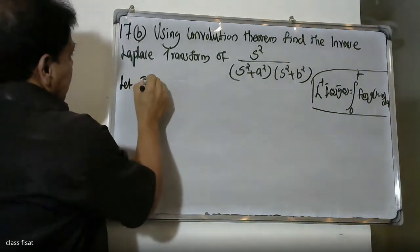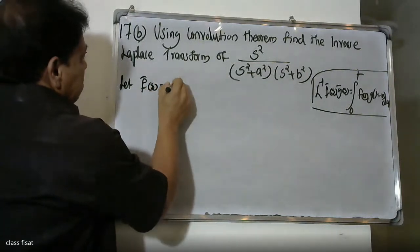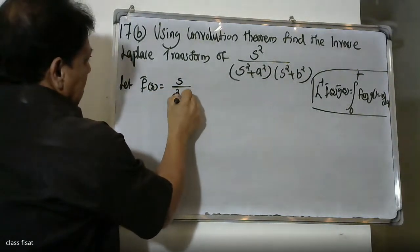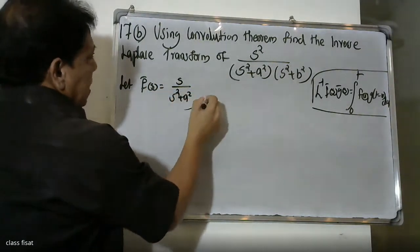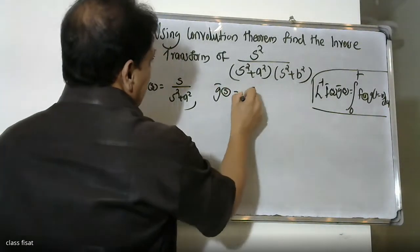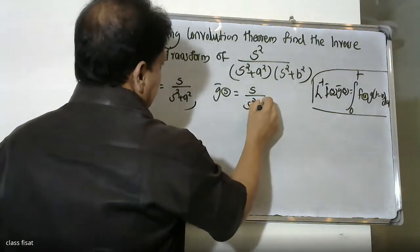We identify F̄(s) as s divided by (s squared plus a squared), and Ḡ(s) as s divided by (s squared plus b squared).